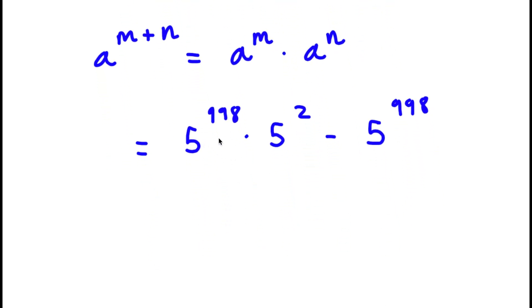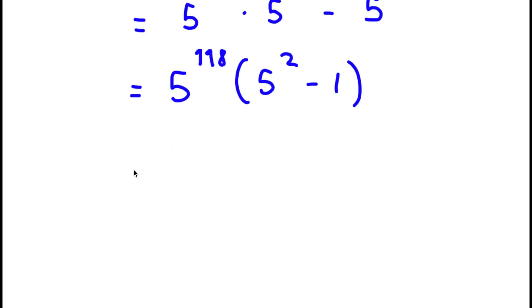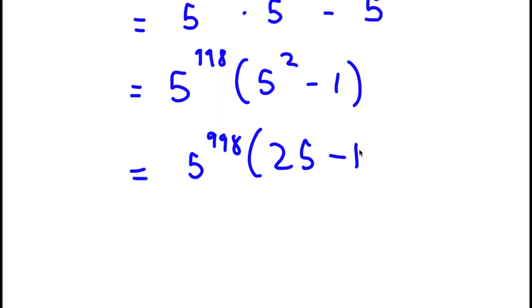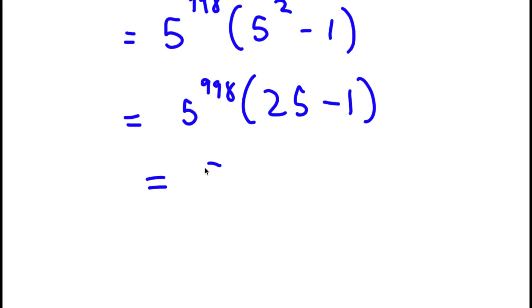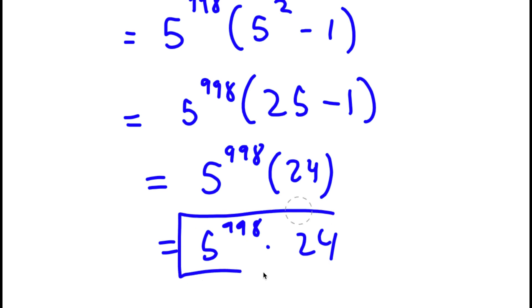Now I'm going to factor out 5^998. So I have 5^998 times (5² - 1). And 5² is simply equal to 25. So I have 5^998 times (25 - 1). And 25 - 1 is 24. So I'm left with 5^998 × 24. So this is my answer.